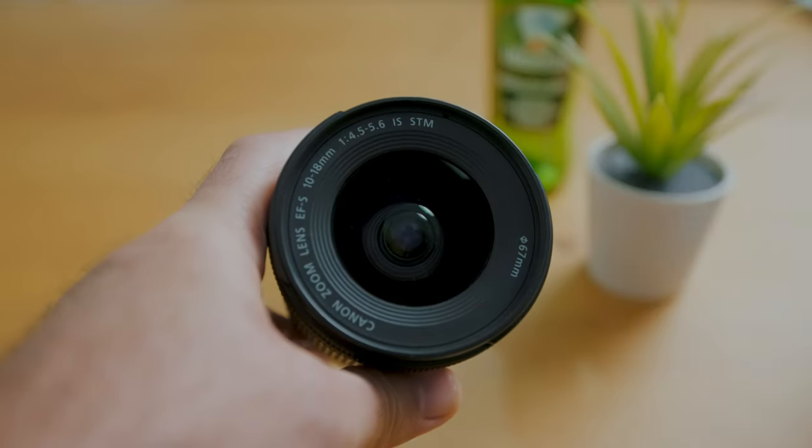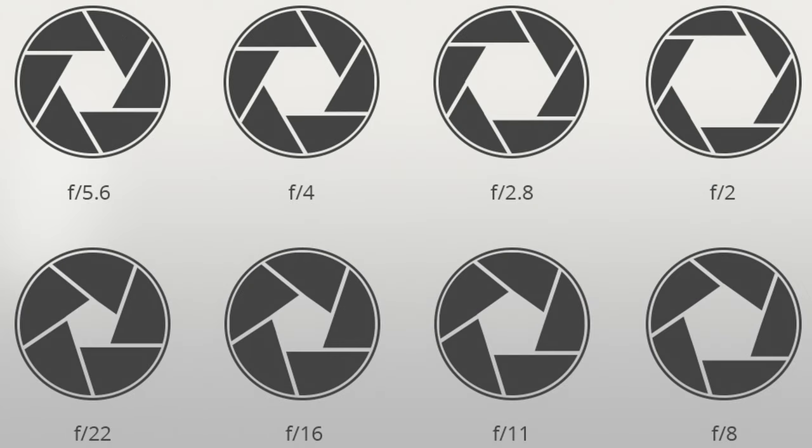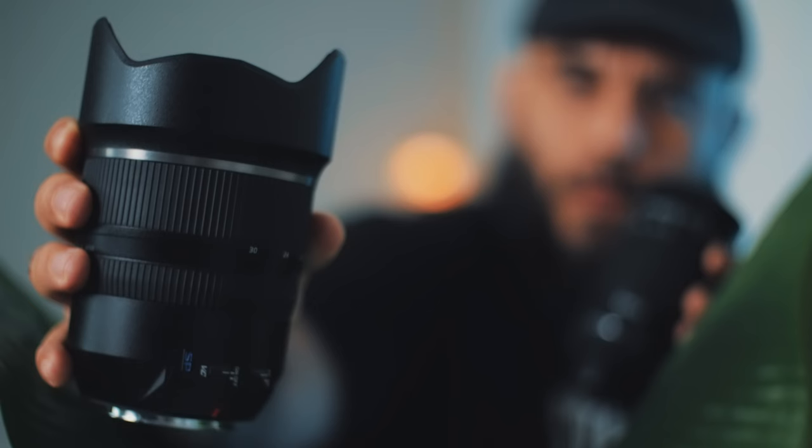The next thing we want to focus on is our aperture — slight pun intended. Our aperture is simply the hole in the lens that allows light to pass through and hit the sensor. How wide that aperture can open is represented by a number called your F-stop, written on your lens as F2, F4, F5.6, etc. The closer that number is to zero, the wider your aperture can open. The wider it opens, the more light it lets in. Lenses with an aperture of F2.8 or better are referred to as fast lenses, and they're generally more expensive.